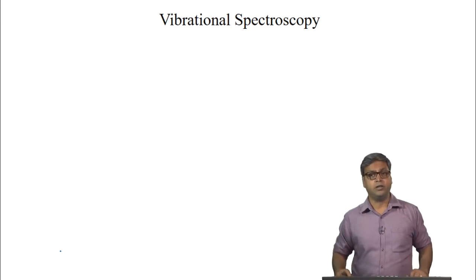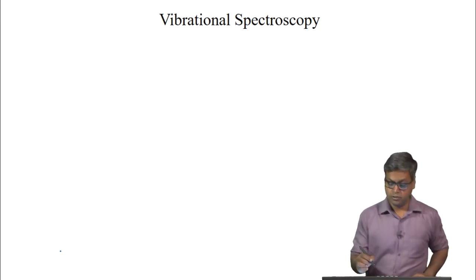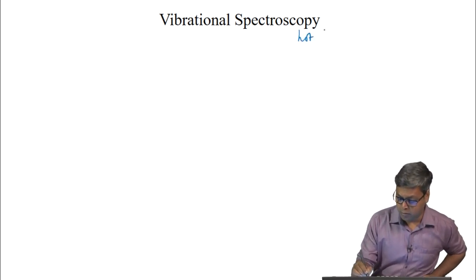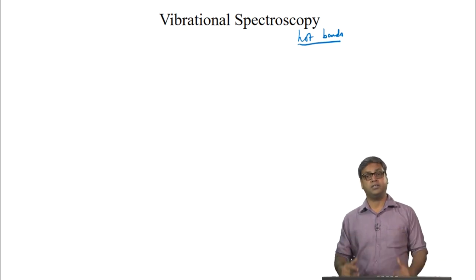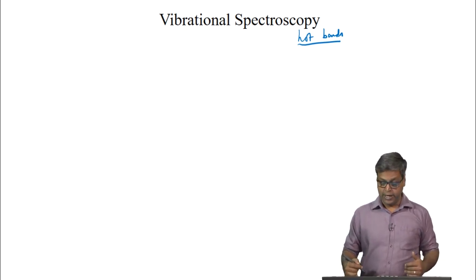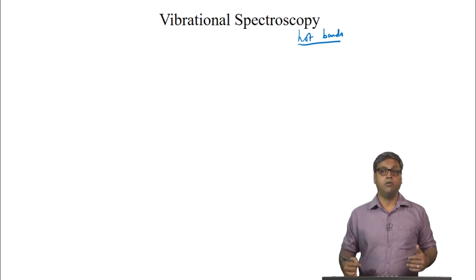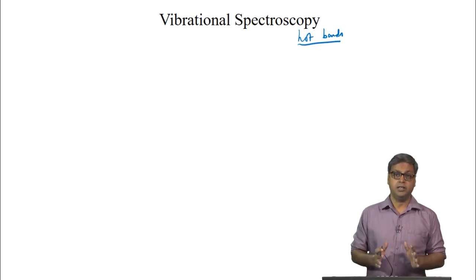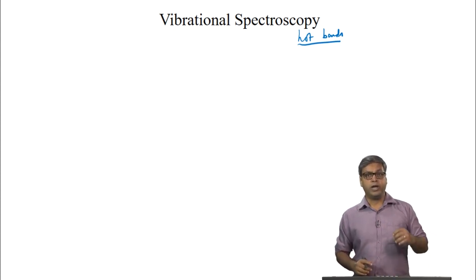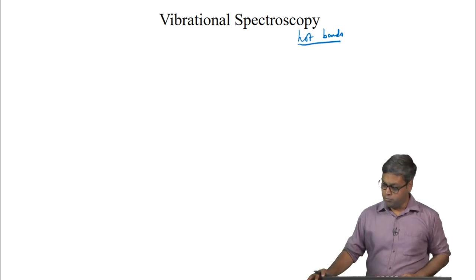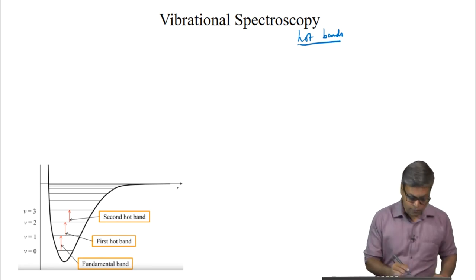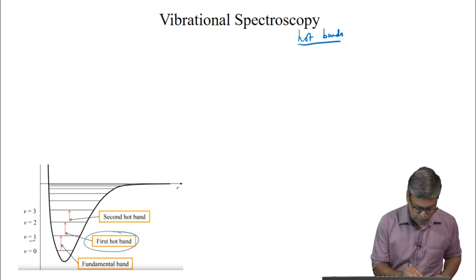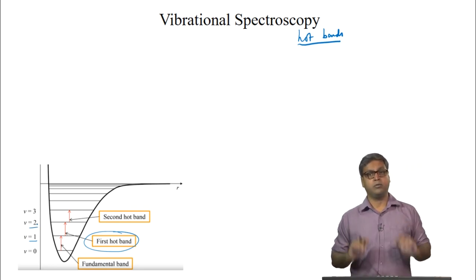There is another kind of transition known as hot bands. Hot bands also have smaller intensity than the fundamental, like overtones, but the reason for this smaller intensity is entirely different. We can have a transition from V=1 to V=2, which is the first hot band.